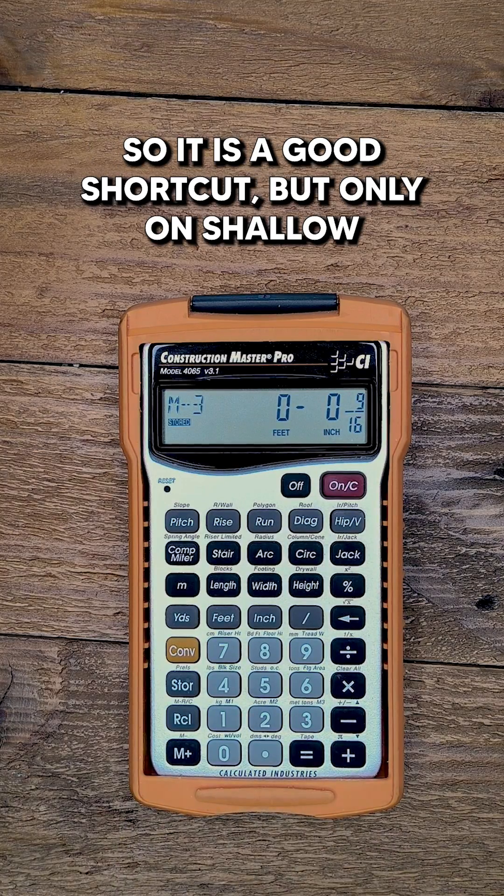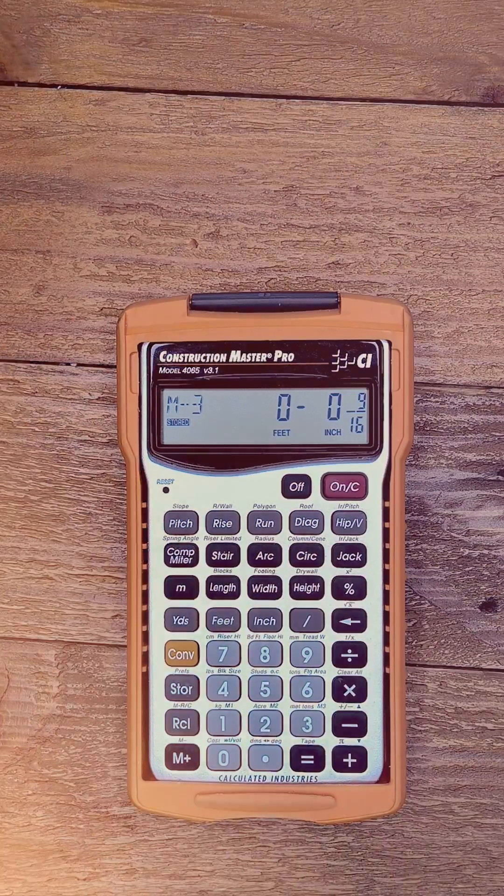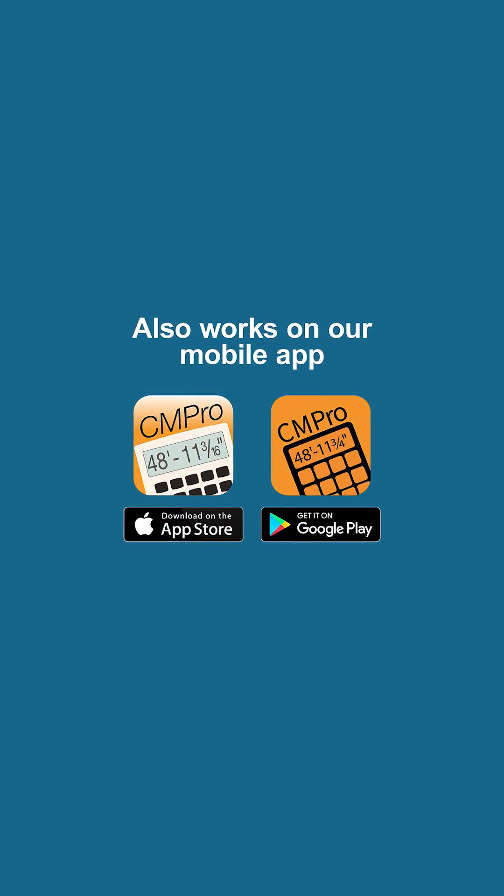So it is a good shortcut, but only on shallow pitched regular hips and valleys using 2x stock.